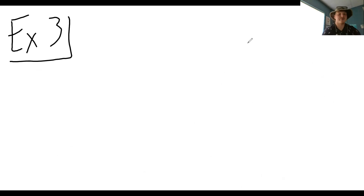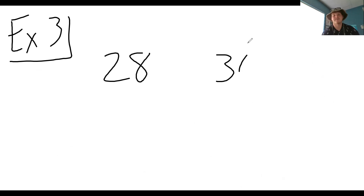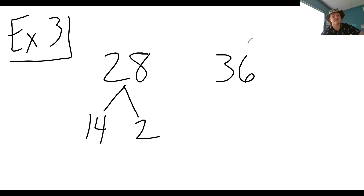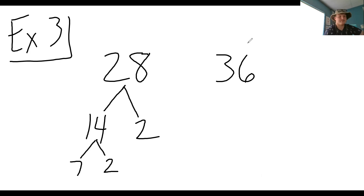Let's try another example — 28 and 36. Let's break down 28. You can do 14 and two — two is prime, and 14 breaks into seven and two. Seven is a prime number. So I'd take two times two times seven for 28.